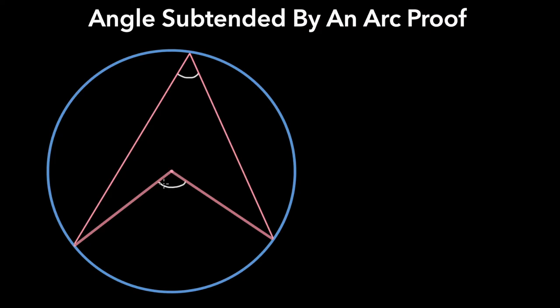In this video, we will prove that the angle subtended by an arc at the center of the circle is double the angle subtended by that same arc at any point on the remaining circumference. In other words, if I call this angle A and this angle B, we are going to be proving that A is equal to 2B.